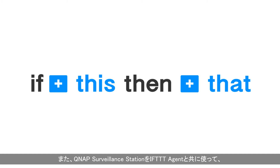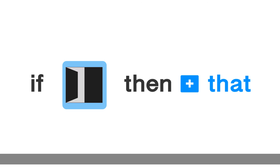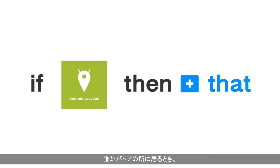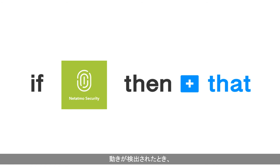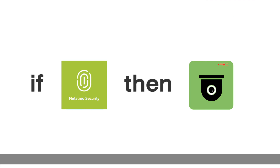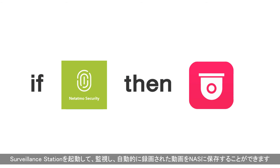You can also use QNAP Surveillance Station with IFTTT agent to create several surveillance scenarios, such as when you leave home, when someone is at the door, or when any motion is detected — then start Surveillance Station to monitor and automatically save recorded videos to the NAS.